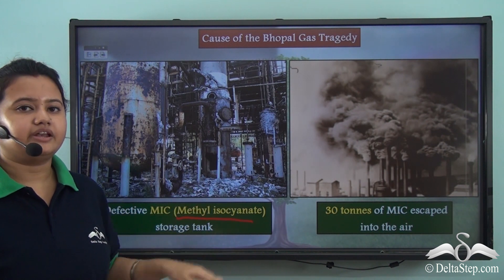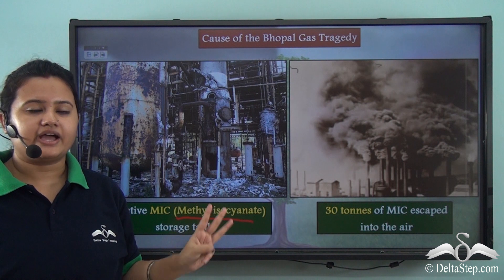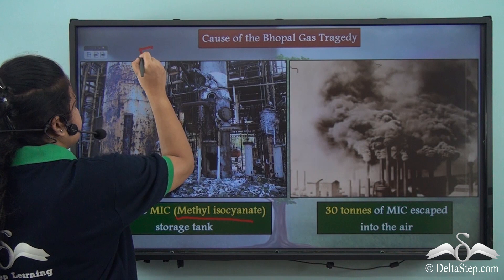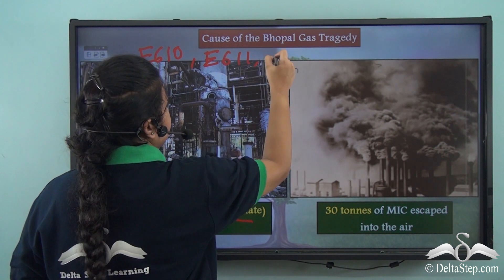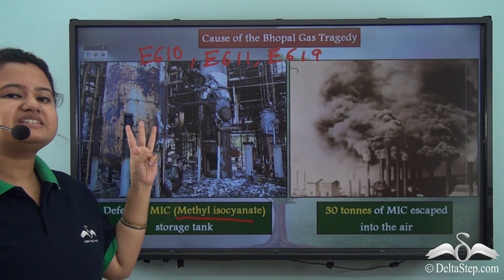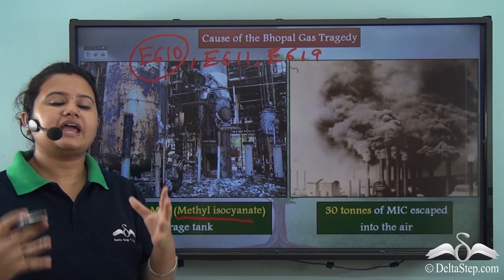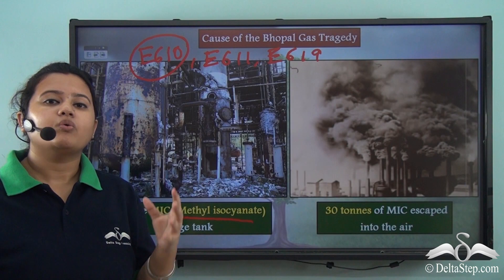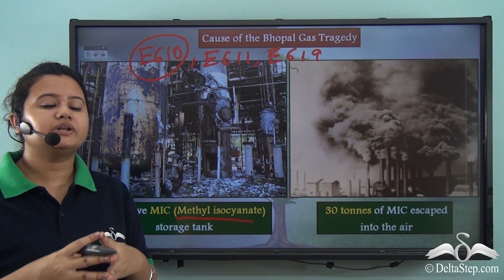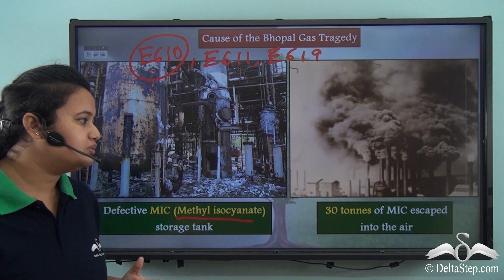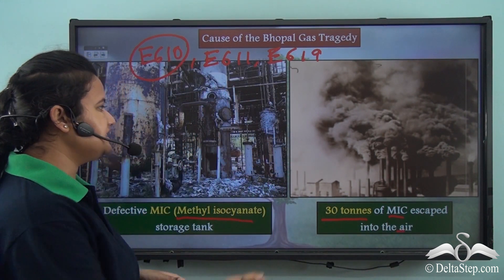Methyl isocyanide was the major pollutant of the Bhopal gas tragedy. The 3 MIC storage tanks present in this plant were namely E610, E611, and E619. Out of these 3 storage tanks, one of them was defective — it was E610. Water entered through this defective storage tank and led to a massive chemical reaction, which eventually caused the explosion of the tank, and about 30 tons of MIC gas was released into the air.